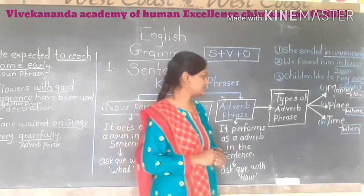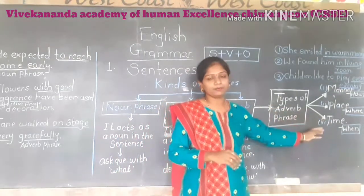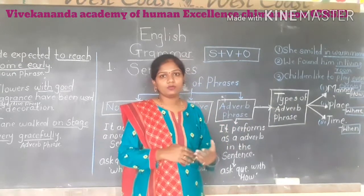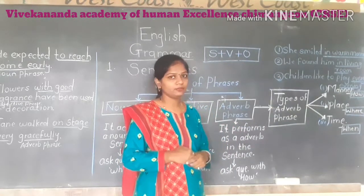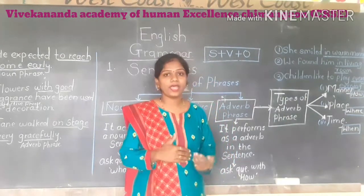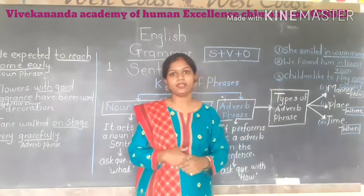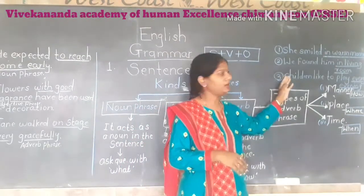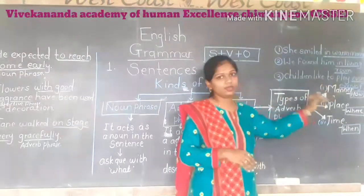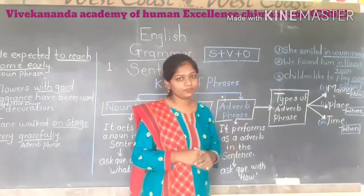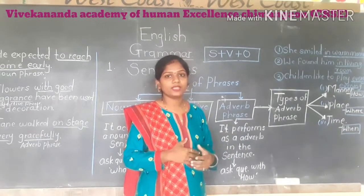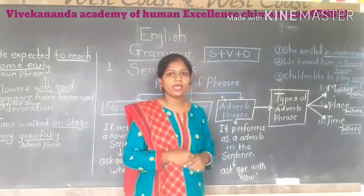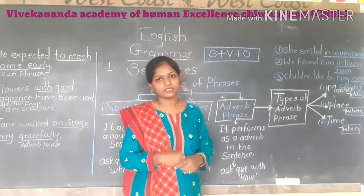The third and last subtype is the adverb phrase of time. To identify it, ask the question 'When?' For example: 'Children like to play every evening.' When do the children like to play? — 'Every evening.' So 'every evening' is the adverb phrase of time.